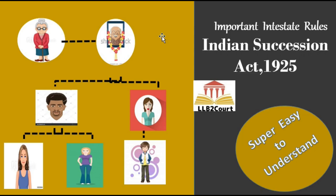A person is deemed to die intestate when he doesn't make a will. If he makes a will, the property will be distributed to whoever he has mentioned in that will. If he doesn't make a will, the law prescribes how to distribute his property to the successors after his death.